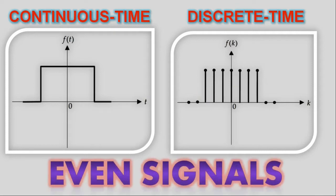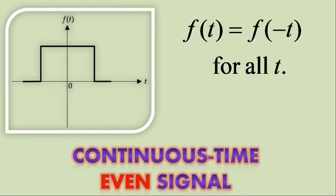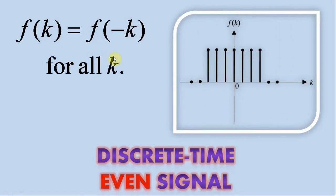Mathematically, a continuous time signal F(t) is said to be an even signal if it satisfies the condition F(t) = F(-t) for all t. Likewise, a discrete time signal F(k) is said to be an even signal if it satisfies the condition F(k) = F(-k) for all k.